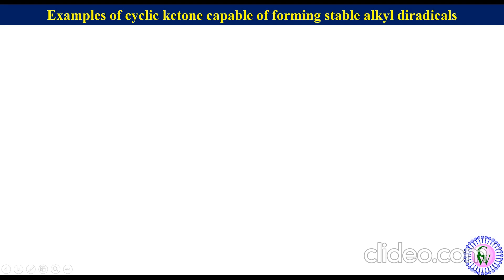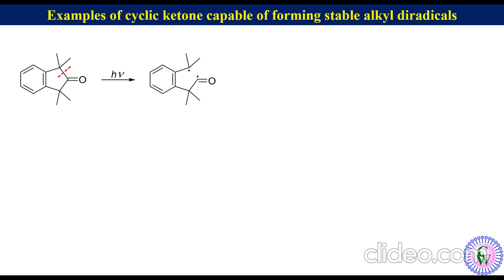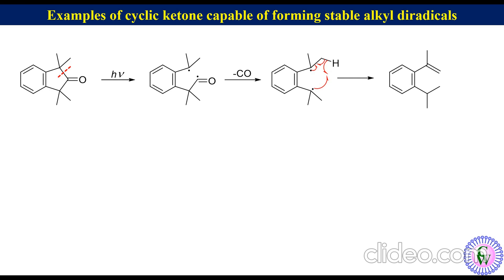Examples of cyclic ketones capable of forming stable alkyl diradicals: in such cases, after alpha cleavage, loss of carbon monoxide is the predominant process. For example, when 1,1,3,3-tetramethyl-1,3-dihydro-2H-inden-2-one is irradiated, it undergoes alpha cleavage to produce an acyl-alkyl diradical which undergoes decarbonylation to produce an alkyl diradical. The decarbonylation process is facile as the alkyl radical formed after decarbonylation is very stable. The hydrogen alpha to one radical carbon gets abstracted by the second radical to produce 1-isopropyl-2-(prop-1-en-2-yl)benzene as the major product.